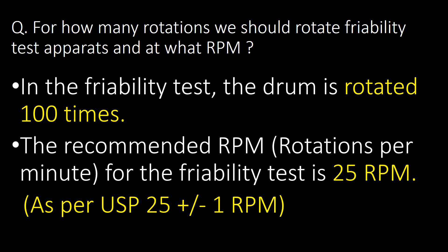Second question: for how many rotations should we rotate the friability test apparatus drum, and at what RPM? In the friability test, the drum is rotated 100 times, and the recommended RPM — that is, rotations per minute — for the friability test is 25 RPM.